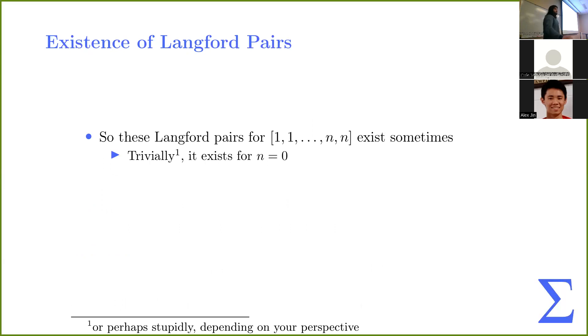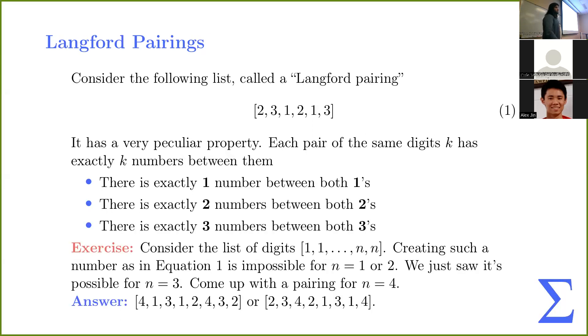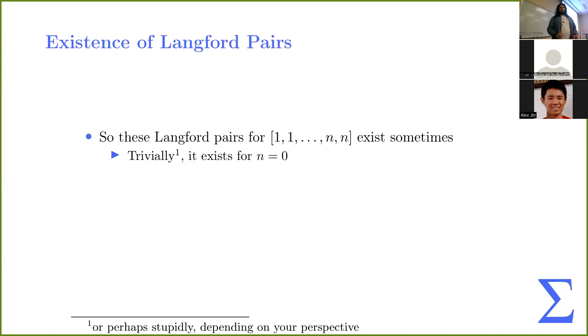So the reversal of the Langford pairing would also always be a Langford. Because we only just care about the relative distance. We don't care which one comes first. So we want to figure out for what n do these Langford pairings exist. So perhaps kind of stupidly, it exists for n is equal to zero, just an empty list, but whatever. No pairing exists for n is equal to one or n is equal to two, right? And let's think about why.